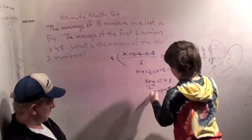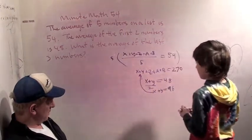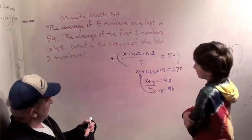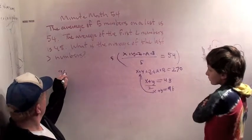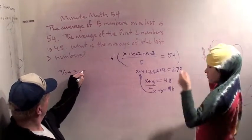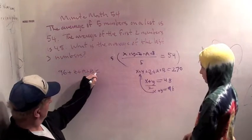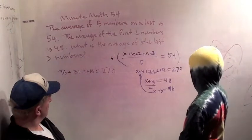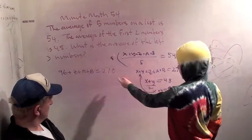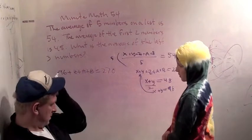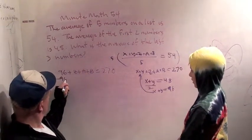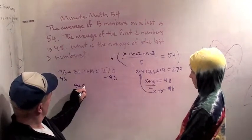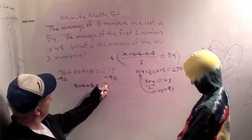So now we can substitute x plus y is 96 into here. Give me the marker. I'll write over here. So we get, substituting in there, we get 96 plus z plus a plus b equals 270. What are you going to do now? Then we can subtract 96. Well, subtract 96 is a lot like subtracting 100. So it's 174.